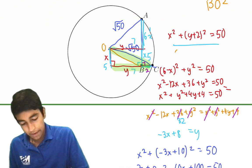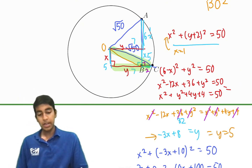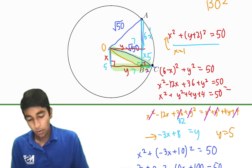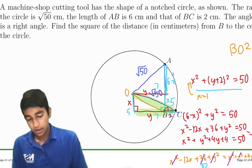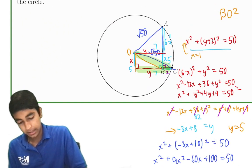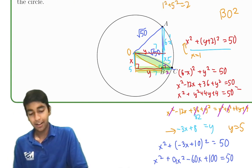So x equals 1 and we can plug it in over here or over here for that matter to get y equals 5. So x equals 1, y equals 5. We're asked to find BO squared. Well, BO squared is just x squared plus y squared by Pythagorean theorem. So 1 squared plus 5 squared equals 26. Our answer.